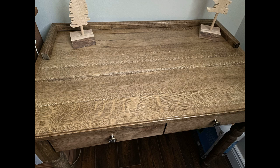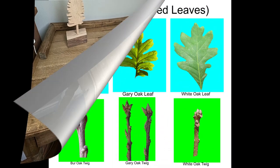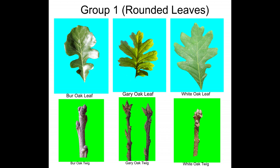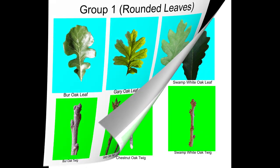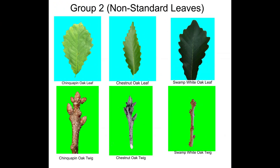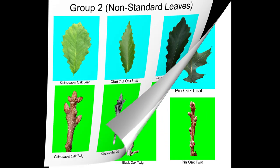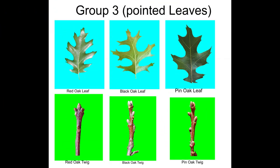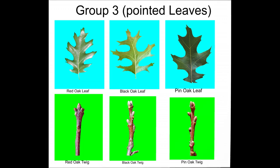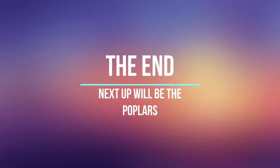All the oaks are around 24 for firewood. That brings us to the end of the oaks. The oaks are valued for their strong grain and hardness. The red oak is the most common oak in Canada. The oaks fit into three groups described as rounded edges, pointed edges, or non-standard oak leaves. Thanks for watching this video, and I hope you can join me for the next video which will look at the poplars. See you then!